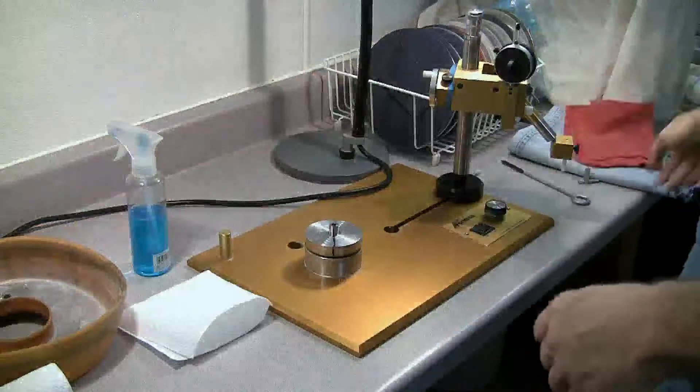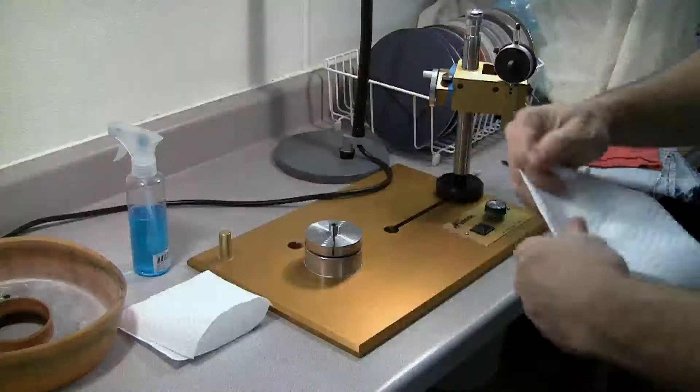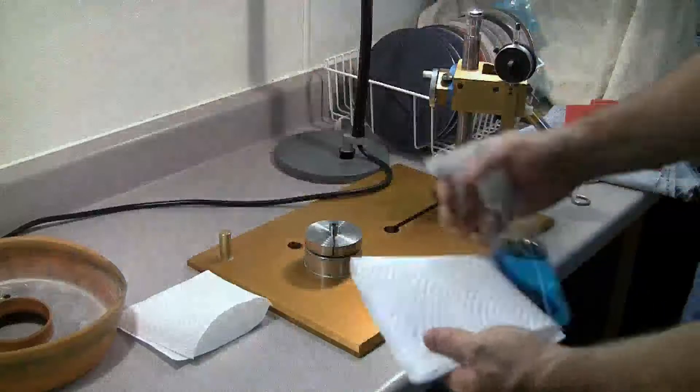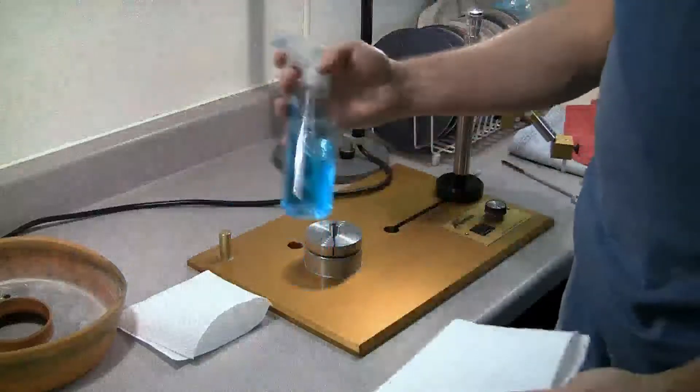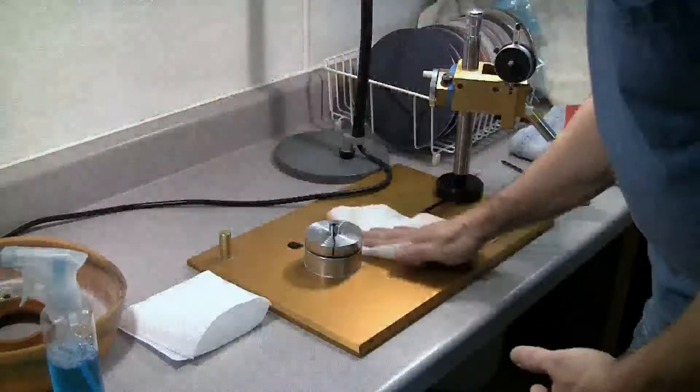You want to use a little cleaner of some kind to help strip off anything that might have gotten stuck to the Facetron equipment, especially if you use the waxing the deck technique. I use a little bit of Windex. This is just a hand spray bottle. I buy it in bulk.